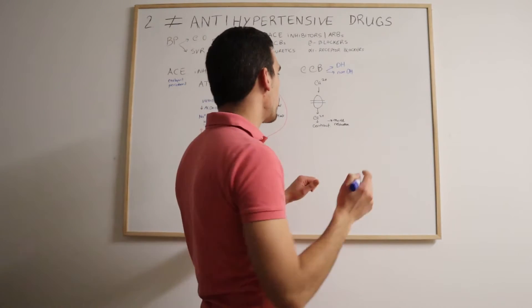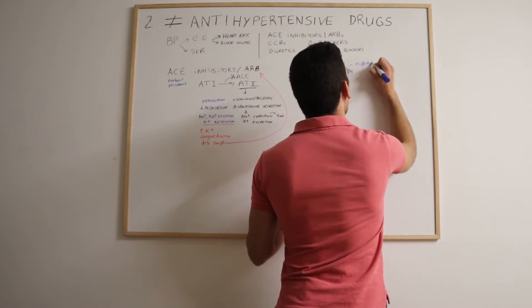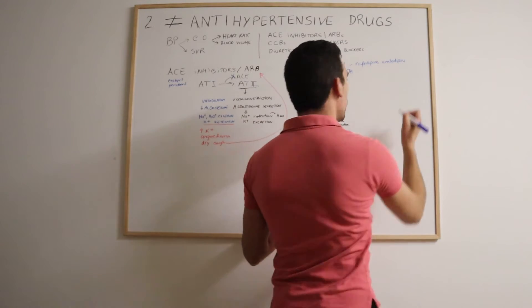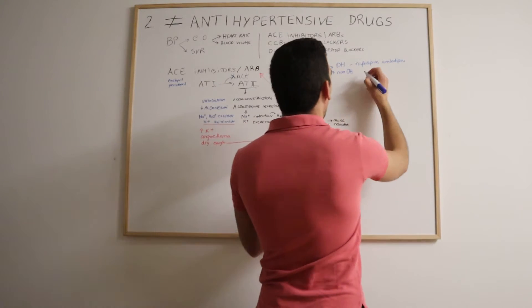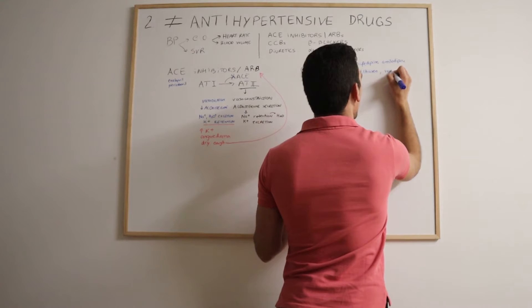Some examples of the first ones are, for example, nifedipine and amlodipine. Whilst the non-dihydropyridine calcium channel blockers, they are diltiazem and verapamil.